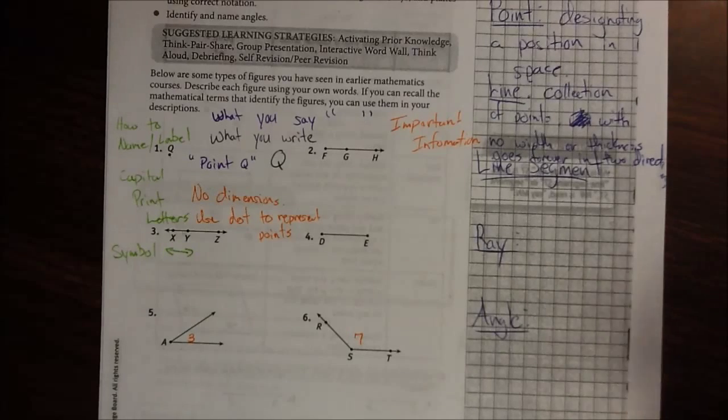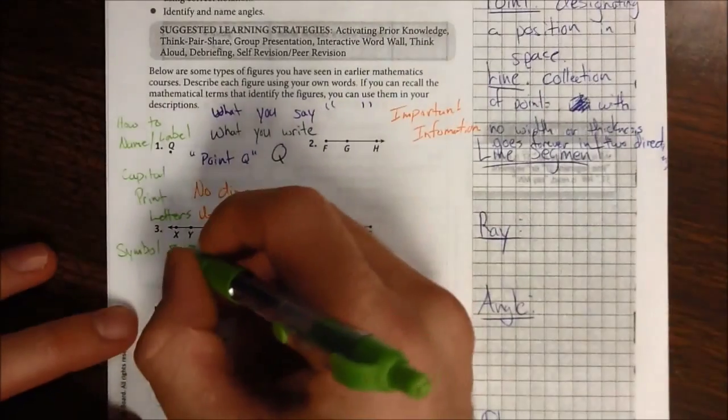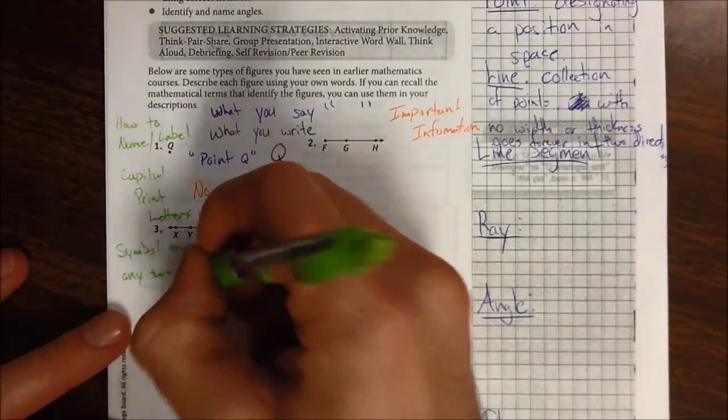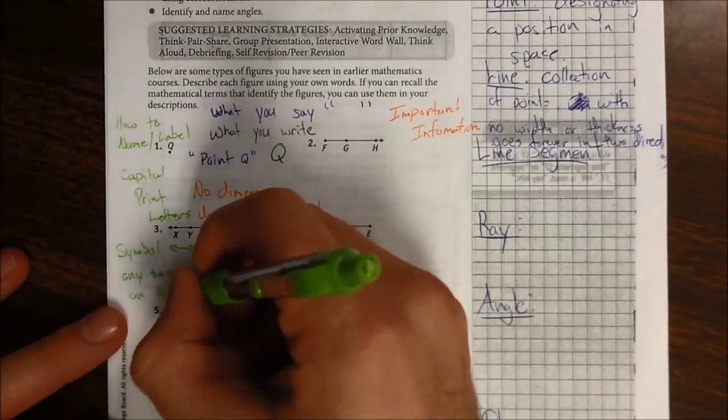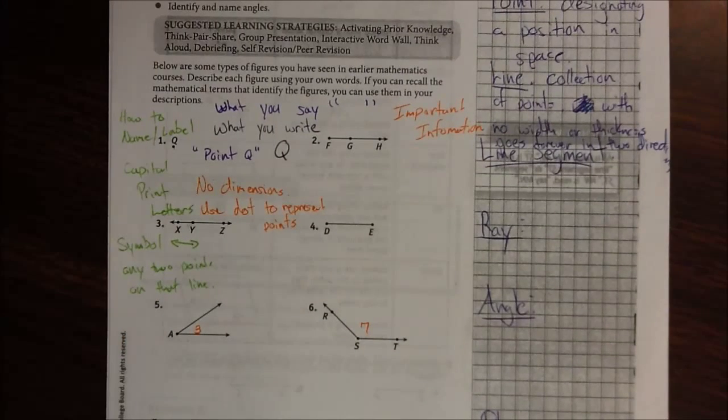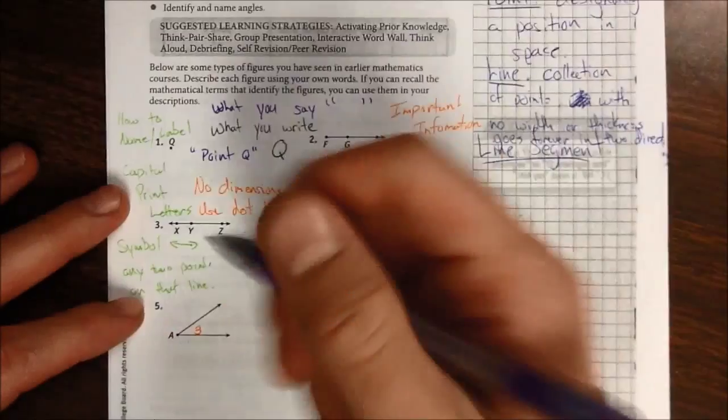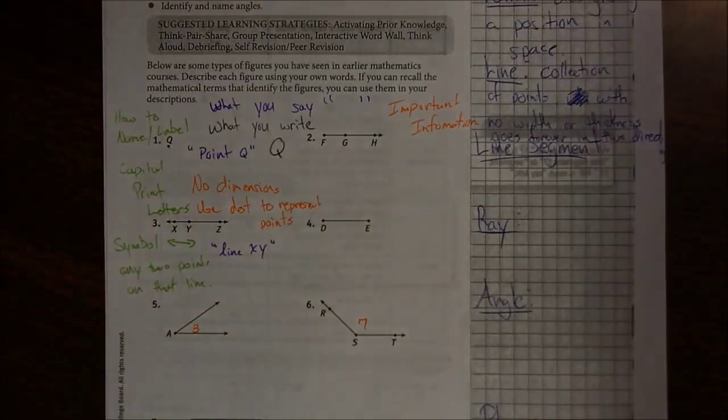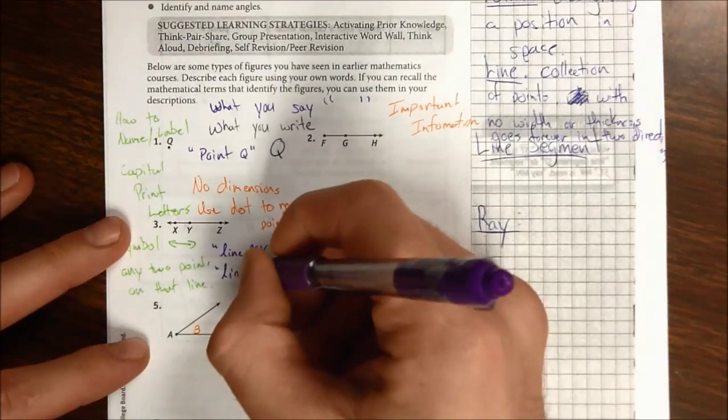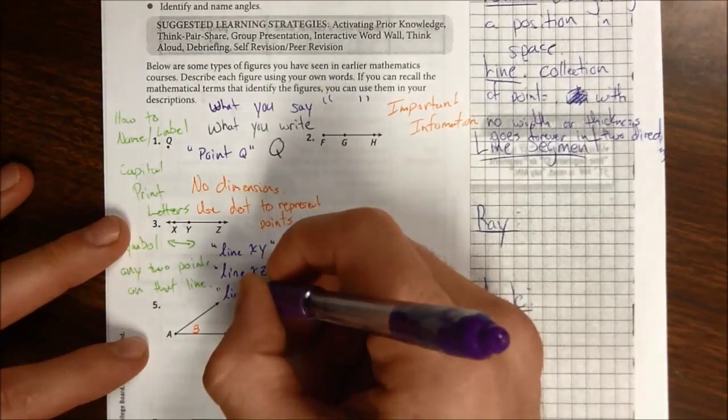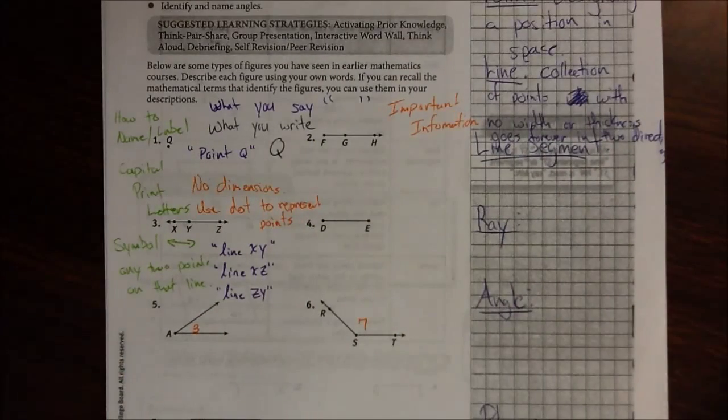And so when we want to label it or name it using the notation, we have this line symbol over any two points on that line. And it doesn't matter what order. So when I see this diagram here, there's a whole bunch of different names that I can call it. I could say that is line XY, I could say that, that's appropriate. I could also call it line XZ. I could also call it line ZY. These are all appropriate names for this one geometric figure.